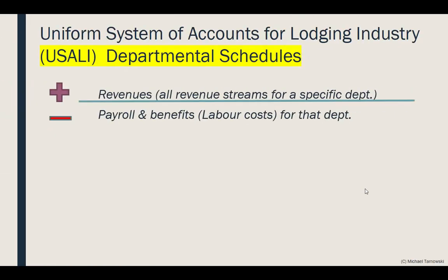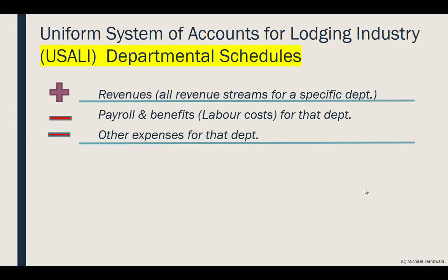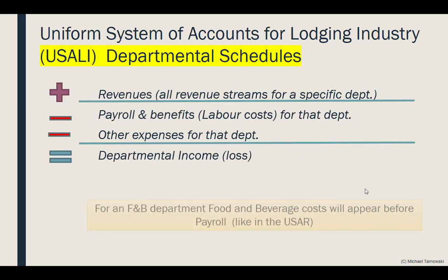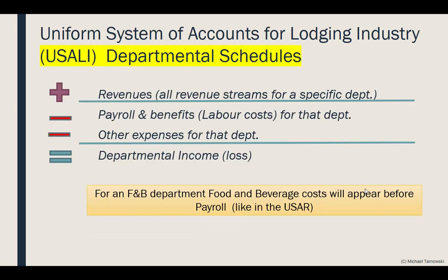So to recap: we look at all revenue streams for a specific department, minus payroll and benefits — labor costs are a very big controllable expense — minus other expenses for that department, and that gives you your departmental income or loss. Remember, food and beverage department costs will appear before payroll in a food and beverage departmental schedule, outlined just like in USAR.